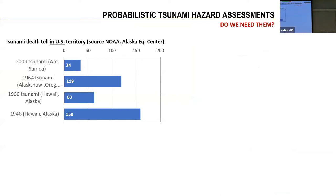Just to put in perspective what has happened with tsunamis in the U.S. specifically: here I'm showing a bar graph with the death toll related to some recent tsunami events in the U.S. As you can see, the death toll is not so large — not so many people died during past tsunami events in the U.S. However, we have to think about whether we are seeing the whole statistic of what is really going on with tsunamis.